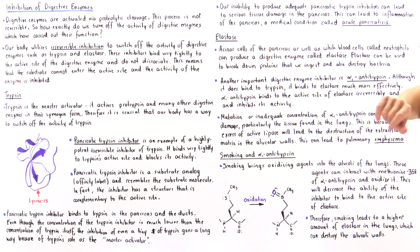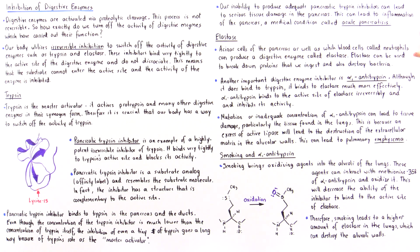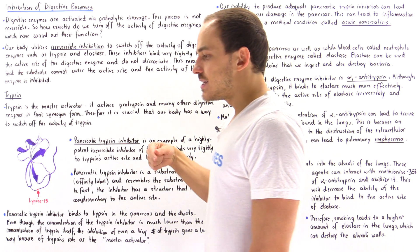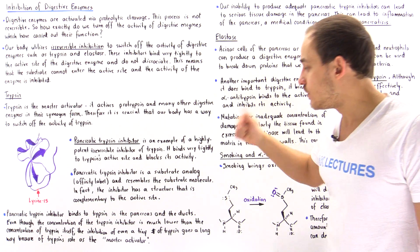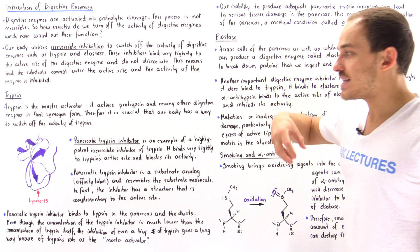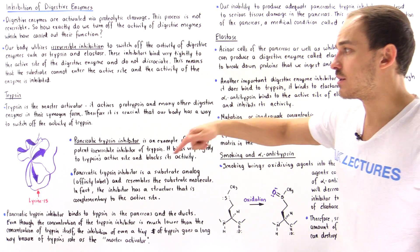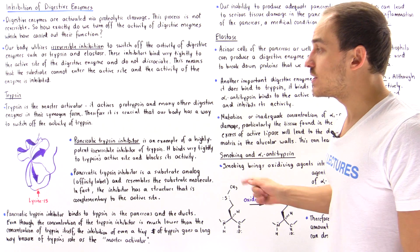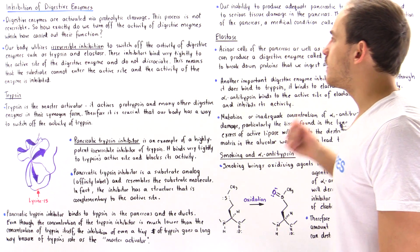Our inability to produce adequate pancreatic trypsin inhibitor can lead to serious tissue damage in the pancreas and inflammation — acute pancreatitis. Remember, trypsin in its zymogen form (protrypsin) is produced in the pancreas, and if activated prematurely in the pancreatic ducts without sufficient inhibitor, it will begin digesting the extracellular environment surrounding pancreatic cells.